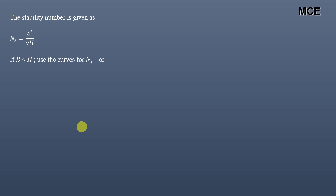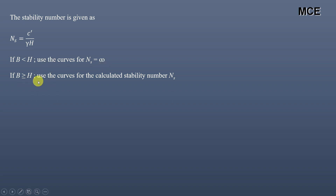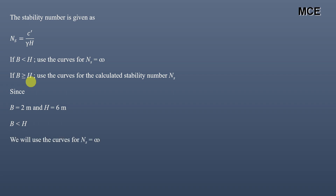To find the bearing capacity of a foundation on the top of the slope, we use the Meyerhof bearing capacity charts, which have curves for the stability number. First, we check: if width of footing is less than height of slope, use the curve for stability number equal to infinity. If width of footing is greater than or equal to height of slope, calculate the stability number and use the corresponding curve. In our case, width is 2 m and height is 6 m, so b < H — we use the curve for stability number equal to infinity.